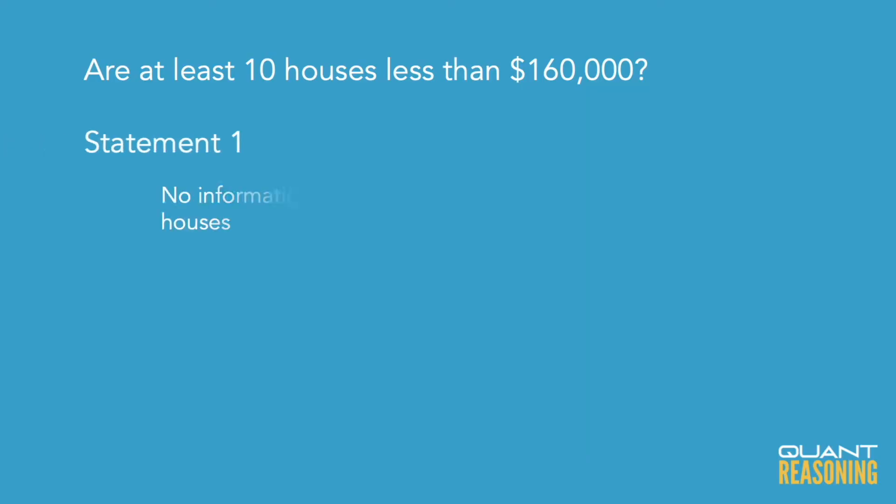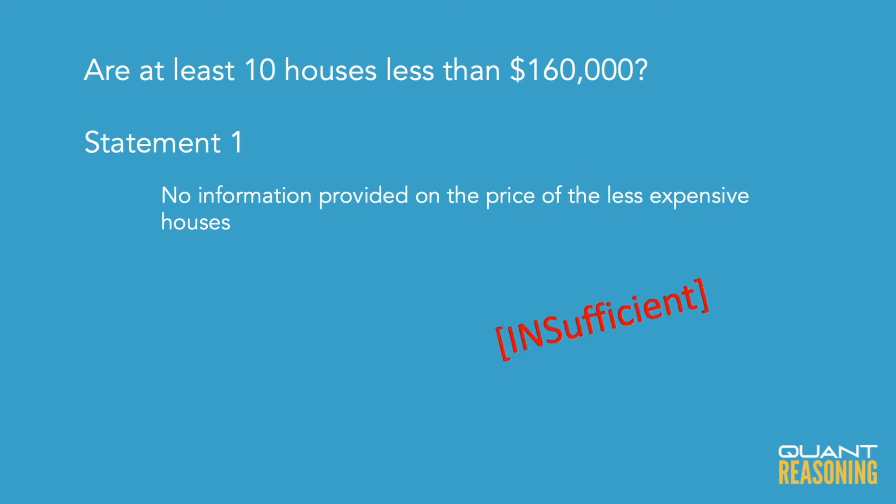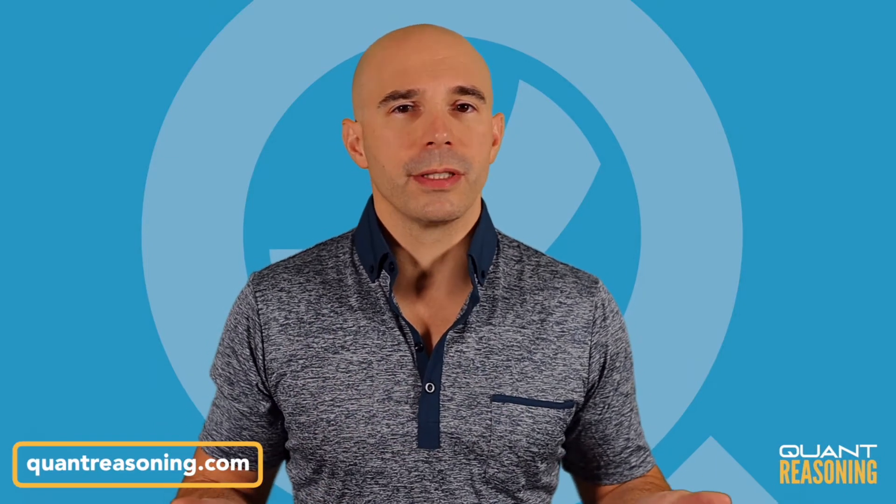Statement one seems a bit easier to evaluate because knowing the value of the highest number doesn't really tell us anything about the lower numbers in the list. Since we know the average and the highest number, we could infer the sum of the lower 19 numbers — but knowing that sum doesn't allow us to infer whether at least 10 of them are below 160,000. There's no way for us to tell.